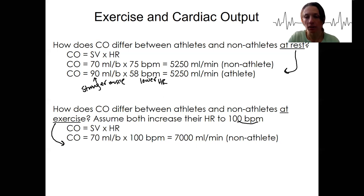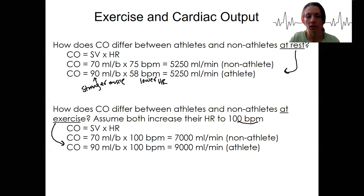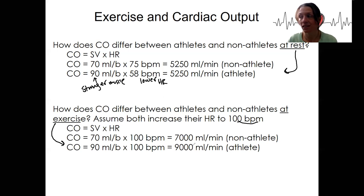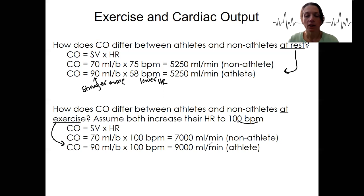What happens to our athlete who also increases to 100 beats per minute? They started with a higher stroke volume, so when they increase their heart rate to 100 beats per minute their cardiac output increases even more. They're able to increase cardiac output even more than a non-athlete.